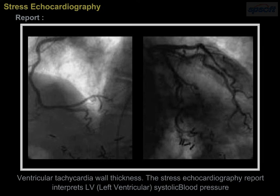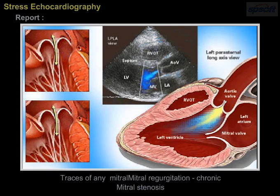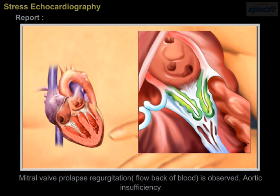The report interprets LV, i.e. left ventricular systolic function. Mitral valve prolapse function is observed as normal or abnormal. Any thickening of mitral valves is also mentioned, along with traces of mitral regurgitation, mitral stenosis, and flowback of blood.